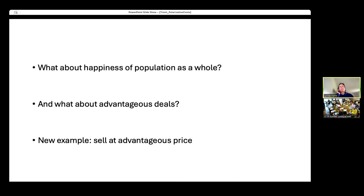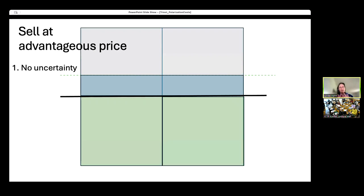If we look at what they think they lost in value subjectively, we can see again that this is going to be largest for the bimodal distribution. The disappointed coalition is going to be most disappointed on aggregate under the bimodal distribution. But we can also look at the happiness of the population as a whole. We can also look at advantageous deals and just for some variety, we can look at selling as opposed to buying.